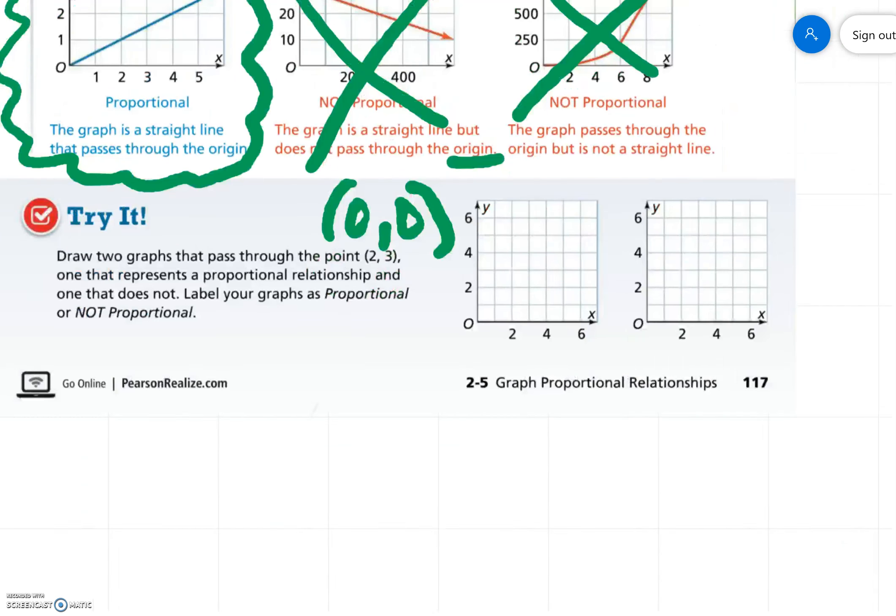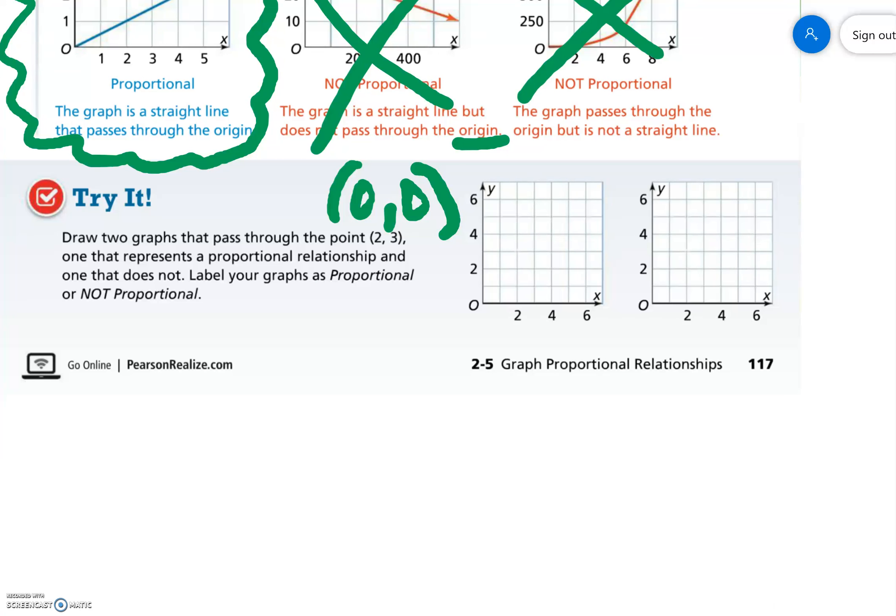Draw two graphs that pass through the point (2,3), one that represents a proportional relationship and one that does not. Label your graphs as proportional or not proportional. So we know it has to go through the point (2,3), both of them.